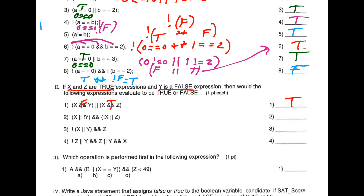For this one, x is true, so right away this evaluates as true. Then NOT x is false, and false OR true evaluates as true. True AND true is true. Then we have x OR y — x is true, so that makes this true.